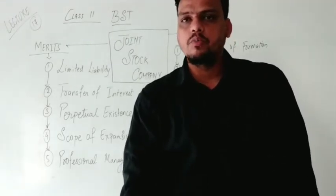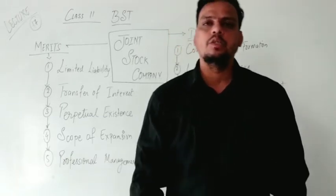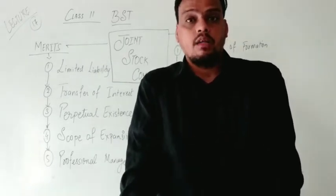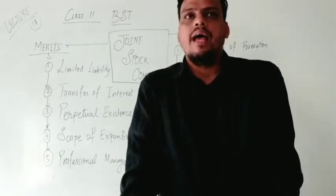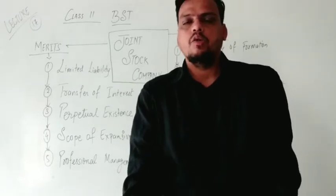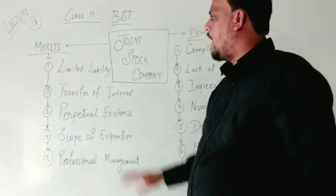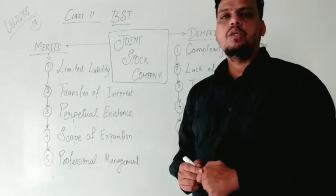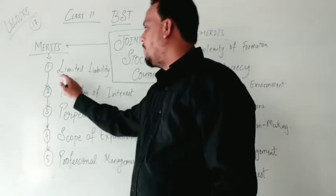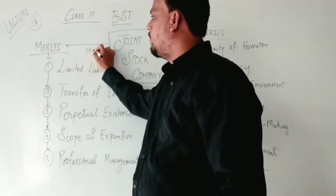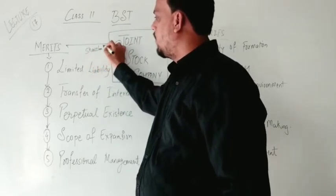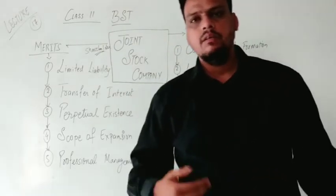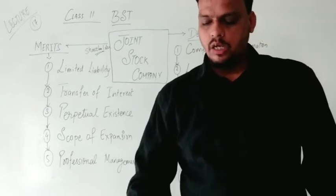Let's begin with the first point: limited liability. As you know, in sole proprietorship, partnership firm, and HUF, the Karta — these are persons whose liabilities are unlimited. Here in joint stock company, limited liability means the shareholder has a certain portion of liabilities according to their ratios. Liability is limited for shareholders. Shareholders are ultimately the owners of the company who invest in the business.